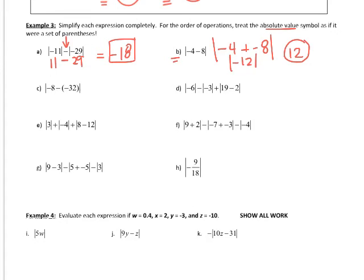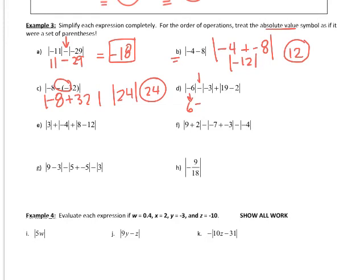For part C, inside the absolute value we have negative 8, and then two negative signs become a positive, giving negative 8 plus 32, which is positive 24. Since 24 is already positive, the absolute value is 24. For part D, the absolute value of negative 6 is 6. The absolute value of negative 3 is 3, and the absolute value of 19 minus 2 is 17. So 6 minus 3 plus 17 equals 20. Please finish parts E, F, G, and H — remember the absolute value must be positive.